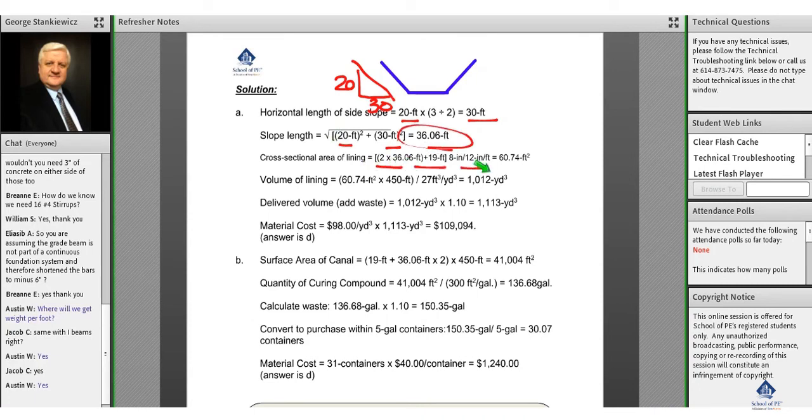The cross-sectional area therefore is 60.74 square feet. We're using it for 450 feet, divide everything to cubic yards because that's the measure that we have in the costs. Don't forget the 10% - it's a common mistake, but if you pay attention to this you'll see very quickly, add that 10% waste factor, and as a result it's going to cost you $109,000.